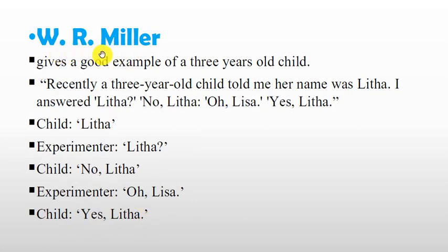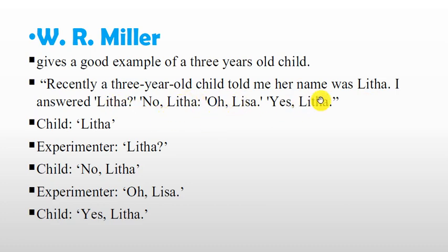W. R. Miller gives another good example. A three-year-old child told him her name was 'Lita'. He answered 'Lita?' She replied 'No, Lita.' He tried 'Lisa?' She said 'Yes, Lisa.' When the experimenter then said 'Lita', the child again corrected 'No, Lita.' This shows the child could perceive the distinction even though she could not produce it differently herself.